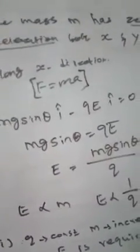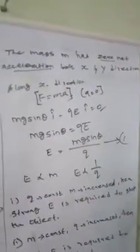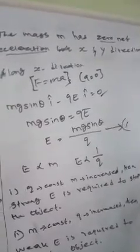The net force equals Mg sinθ (i-cap) minus QE (i-cap), which equals zero, since acceleration is zero. Therefore, Mg sinθ equals QE. That means the electric field E equals Mg sinθ divided by q.